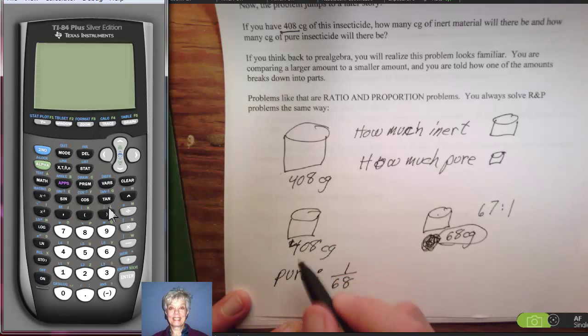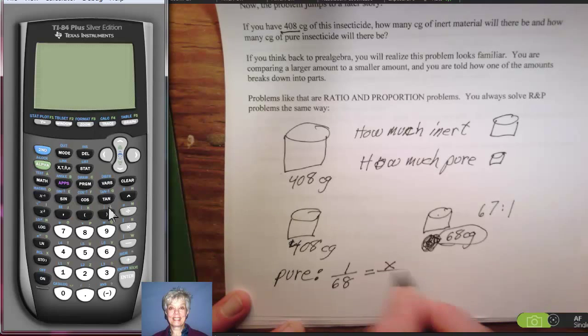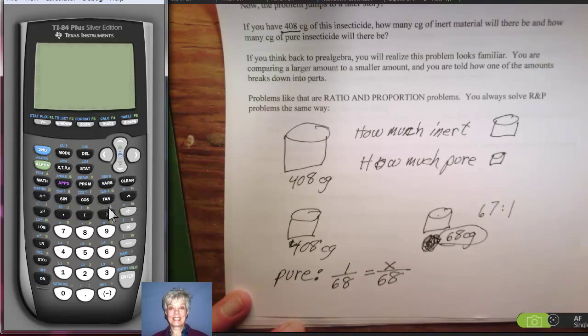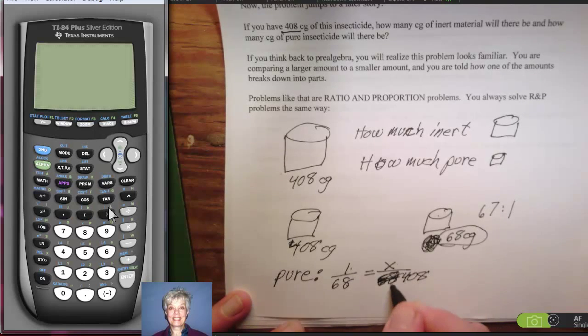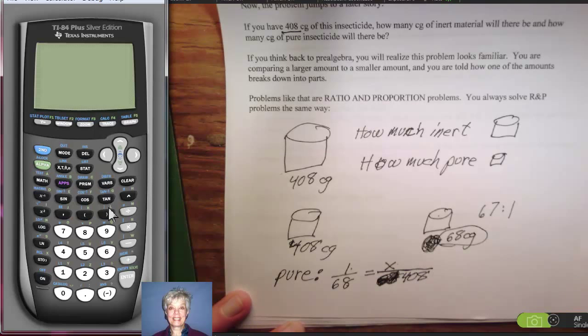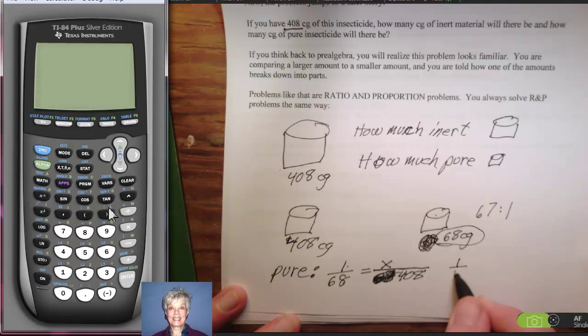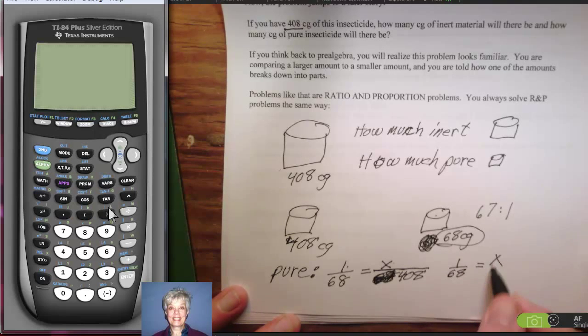How much of the 408 centigrams is pure? So I set this up the same way. 1 pure to 68 total equals x pure to 408 total. Let me write it again. 1 over 68 equals x over 408. This is a proportion.